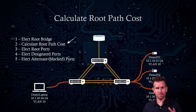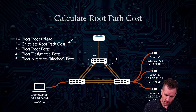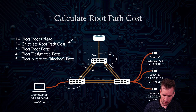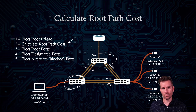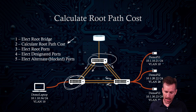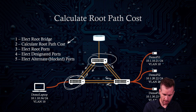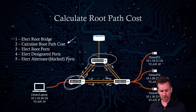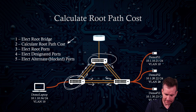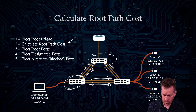When bridge protocol data units are sent out, switch one will send BPDUs to switch two and also to switch three, which will in turn send things out to switch two. Switch two will then see that there are actually four paths that can get to that root bridge — two in one direction and two in another. For each of those paths, it will figure out the cost to get to switch one, the root bridge.